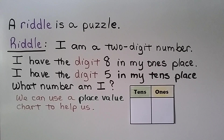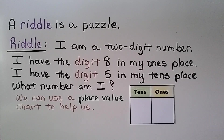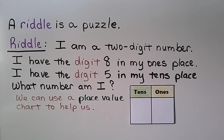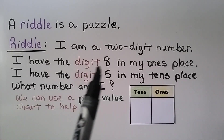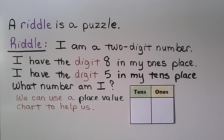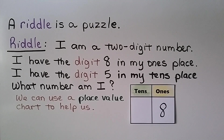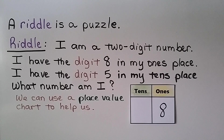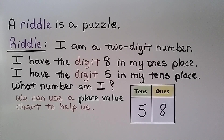A riddle is a puzzle, and here we have a riddle. I am a two-digit number. I have the digit 8 in my ones place. I have the digit 5 in my tens place. What number am I? We can use a place value chart to help us. We put an 8 in the ones place and a 5 in the tens place. Now we can see it's the number 58.